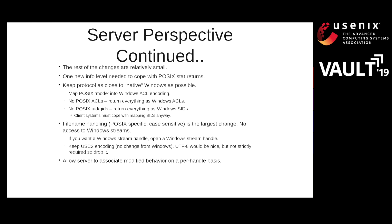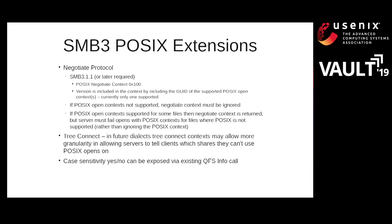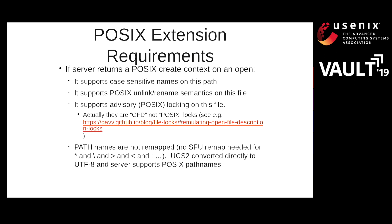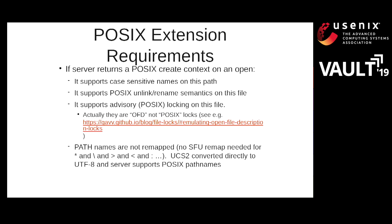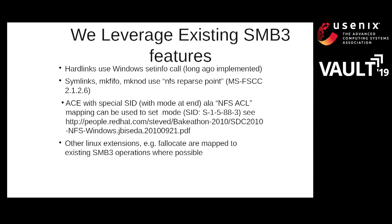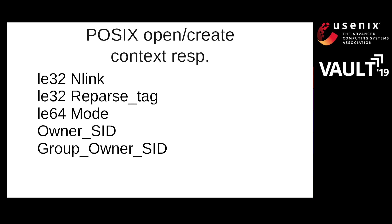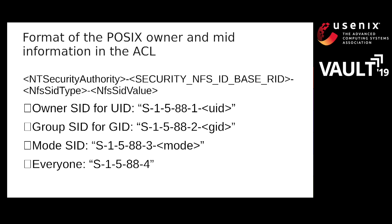From the server perspective, on the negotiate protocol we have quite a simple context. The tree connect — in future we may do something, but right now there's nothing needed. We can return case sensitivity; there's already a QFS info call for that. On an open, we know whether or not the server supports POSIX with the new POSIX context. We're leveraging existing SMB 3.1.1 features. For POSIX owner information in the ACL, look at the owner SID, the group SID, the mode SID — these are already documented in WSPP.